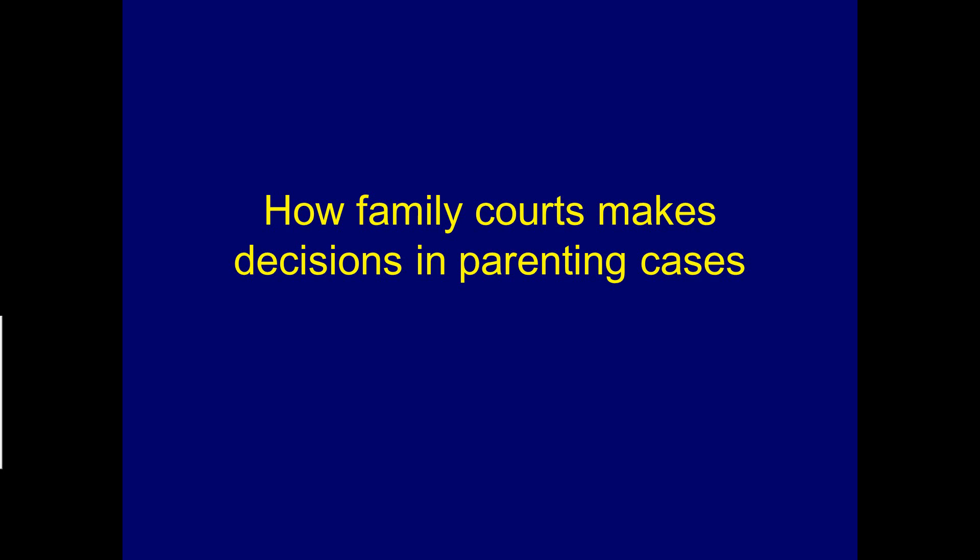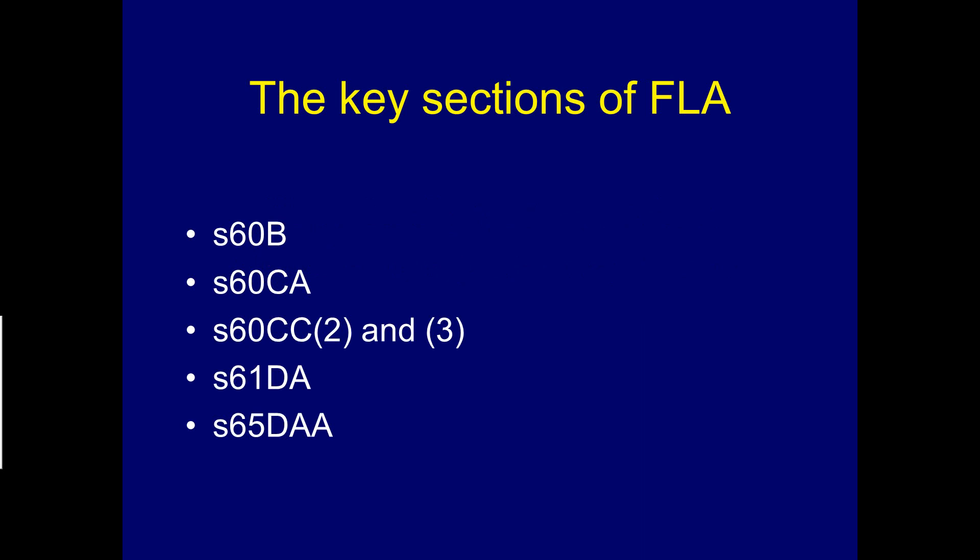In this podcast, we'll be looking at the key sections of the Family Law Act and how family courts approach these sections to make decisions in parenting cases about children. The key sections of the Family Law Act are section 60B, 60CA, 60CC subsections 2 and 3, 61DA, and 65DAA.